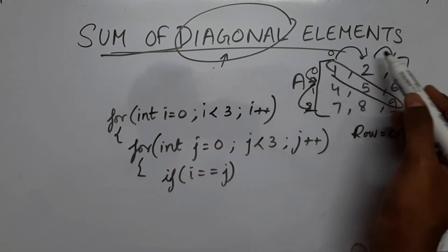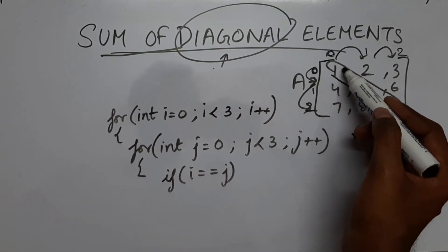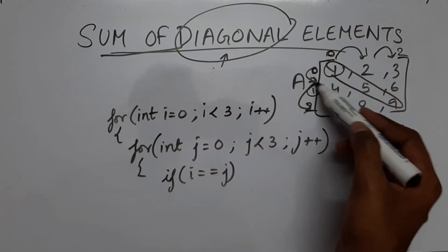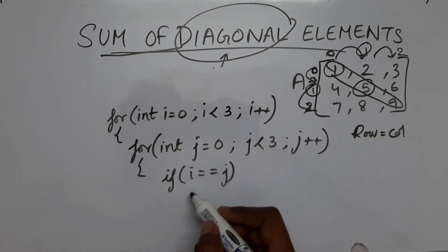This is 0, 1 and 2. When i is equal to j, it is a diagonal element. So if i is equal to j, it is a diagonal element. So if i equal equal j,